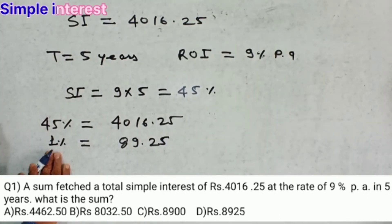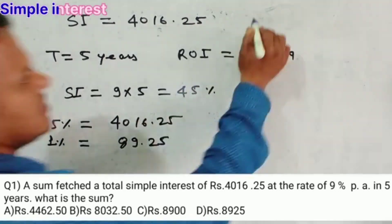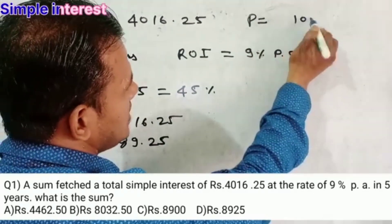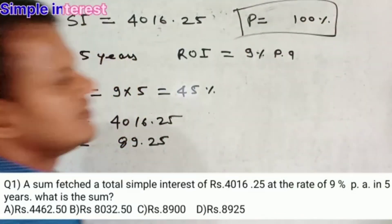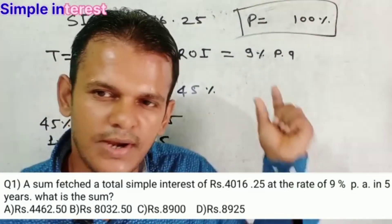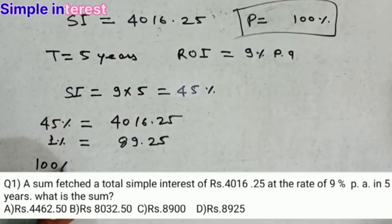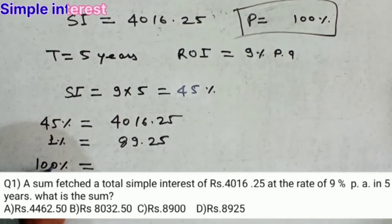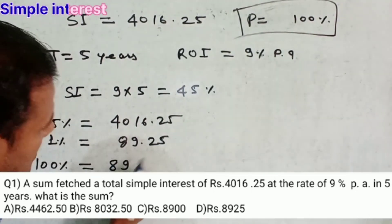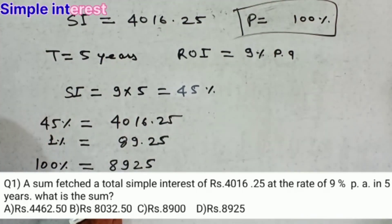This is 1%. So our target is to find what is the 100%. Principle is always 100%. Keep remember these things. Principle always will be 100%. So our target is to find principle means 100%. So 1 into 100 will be 100%. Similarly, 89.25 into 100 will be 8,925.